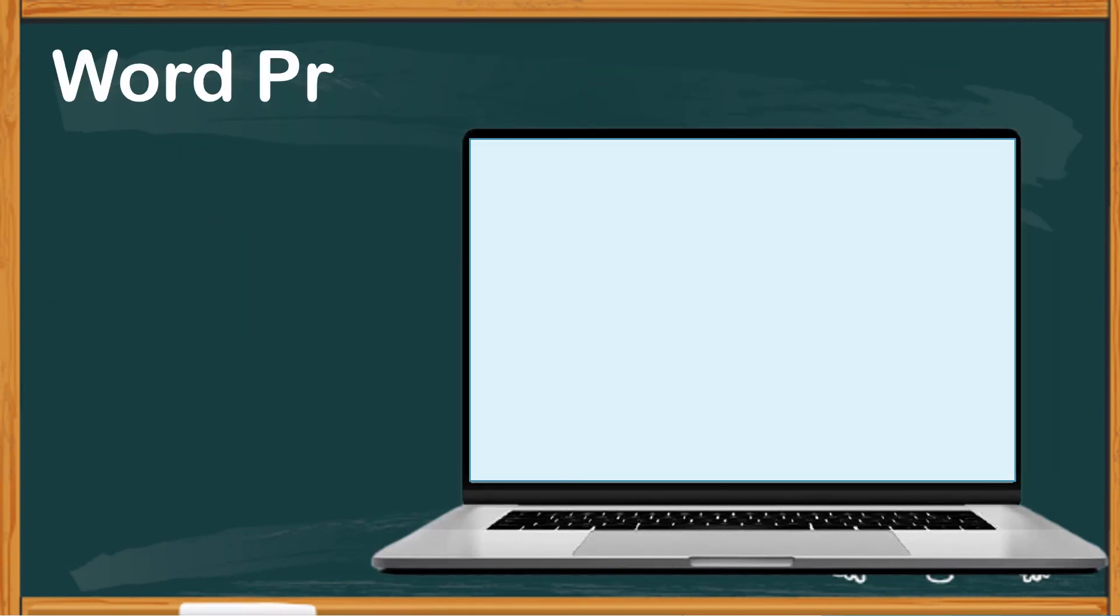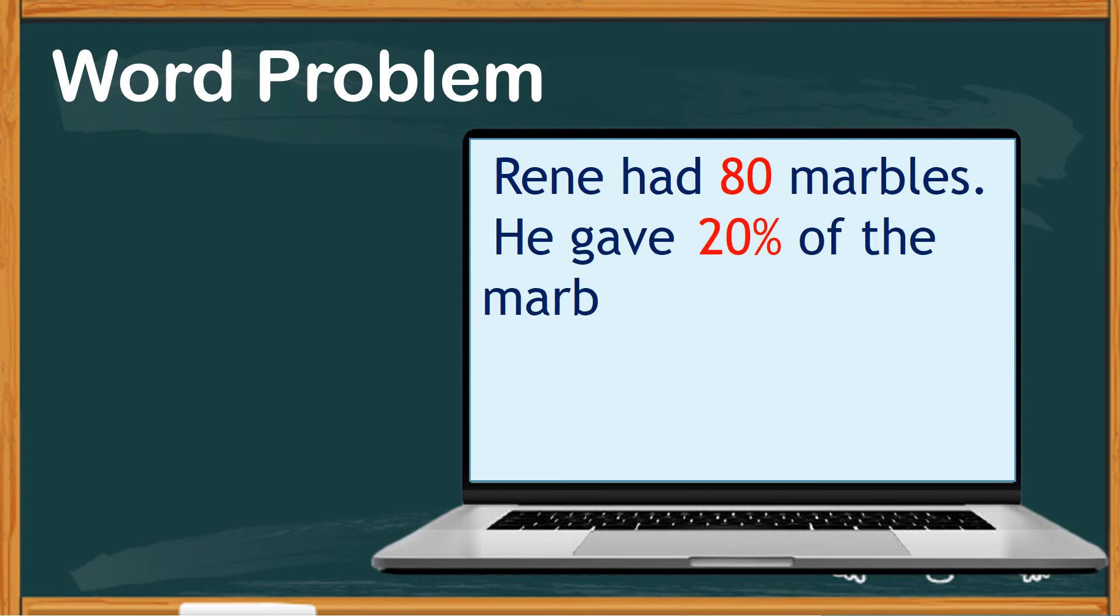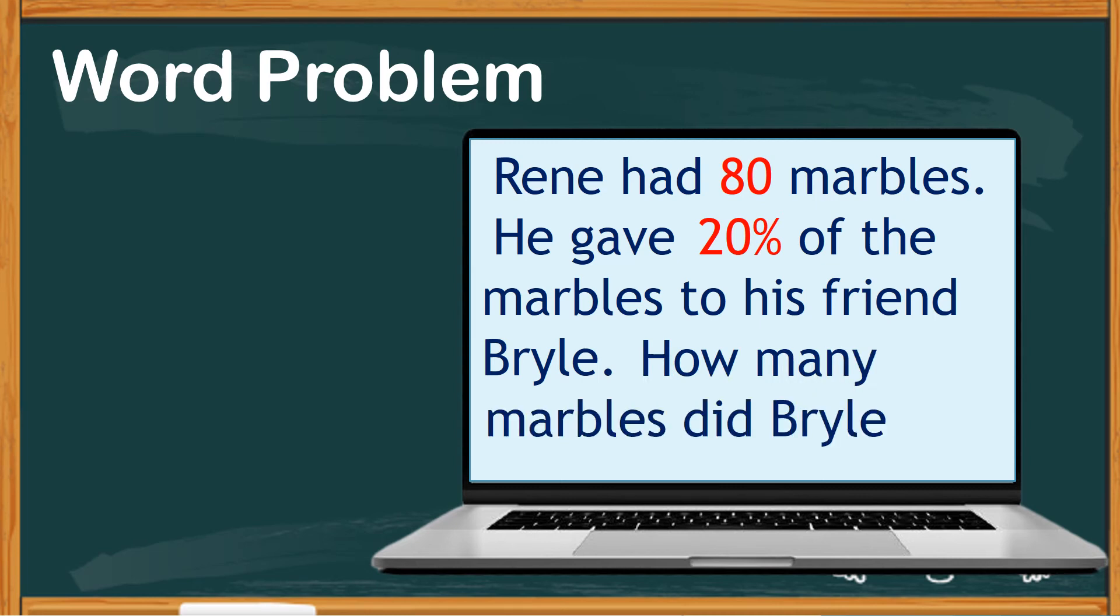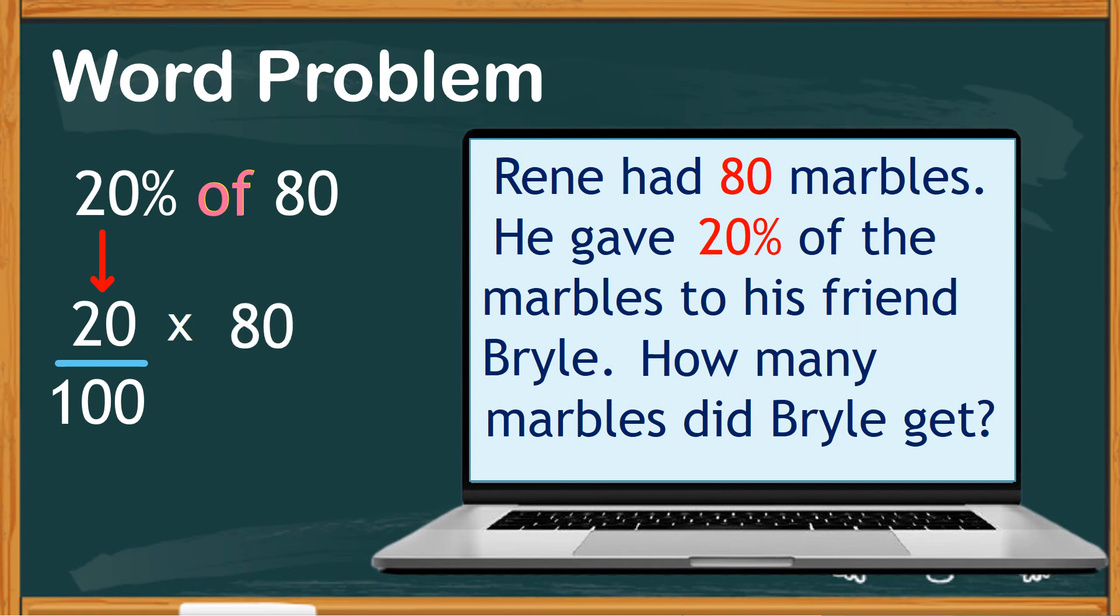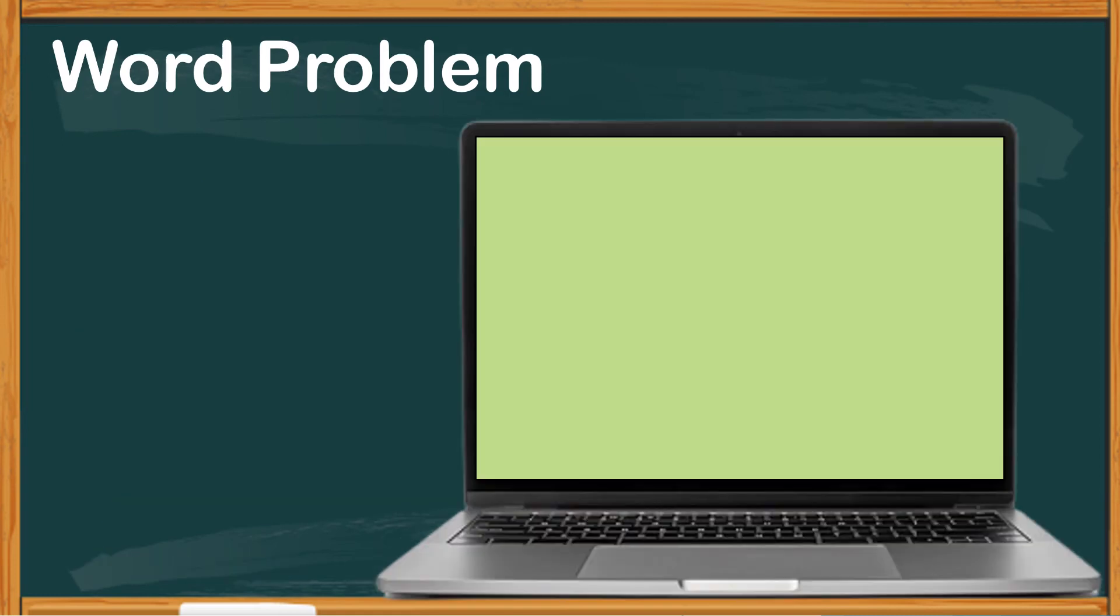Let's try to do simple word problems with percentage. Take a look at this one. How many marbles did Brille get? So, to find the number of marbles Brille received is to find what is 20% of 80. Express 20% as fraction with 20 over 100 and substitute the word 'of' with the symbol times, which means times 80. We can cancel the two zeros in the number above and do the same with the two zeros below. Now, we only have to multiply 2 and 8. And the product is 16. So, 20% of 80 is 16. Going back to the question, how many marbles did Brille get? For our answer, Brille got 16 marbles.